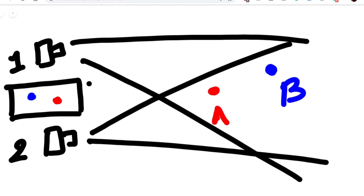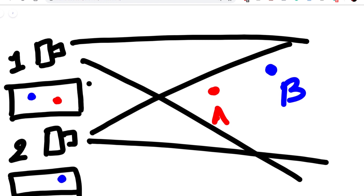For camera two, we see the exact opposite thing happening — point B is now to the right of point A. So this apparent difference in the position of object A when viewed through two different cameras is what we call parallax.